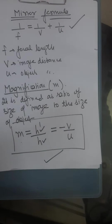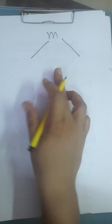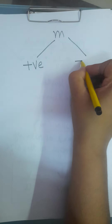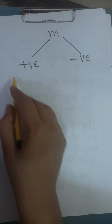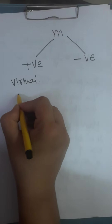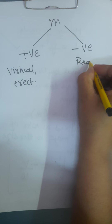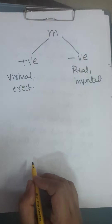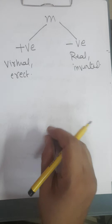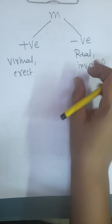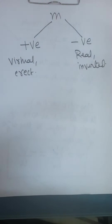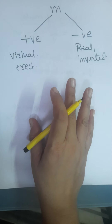You need to remember both the mirror formula and magnification formula well. Let me tell you some things related to magnification. Magnification is of two types — it is either positive or negative. If magnification is positive, then the image is always virtual and erect. If magnification is negative, then the image is real and inverted, always. For example, if you see magnification minus 2, leave the 2 — as soon as you see negative, write real and inverted. If you see plus 1/3, leave the 1/3 — as soon as you see plus, write virtual and erect.